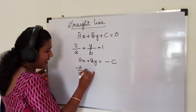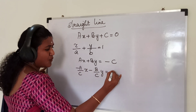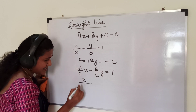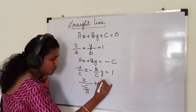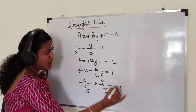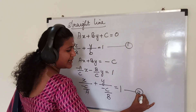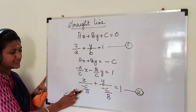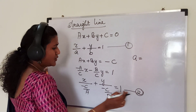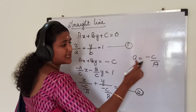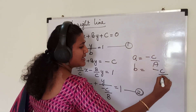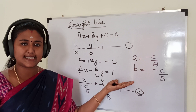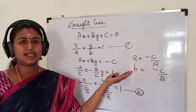So we get minus A by C times X minus B by C times Y is equal to 1. We can rewrite this as X by (minus C by A) plus Y by (minus C by B) is equal to 1. Now compare these two equations. Comparing equation 1 and equation 2, we find X intercept A is equal to minus C by A, and Y intercept B is equal to minus C by B. So from the general equation, the formula for X intercept is minus C by A and Y intercept is minus C by B.